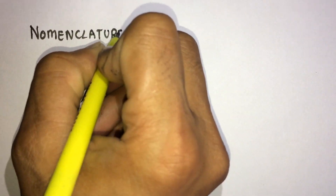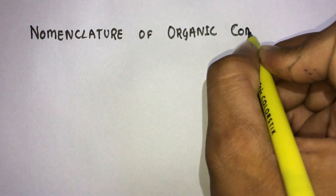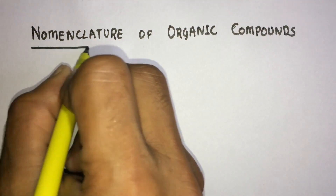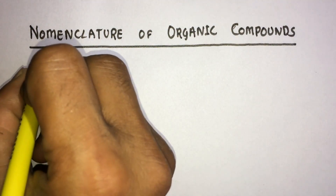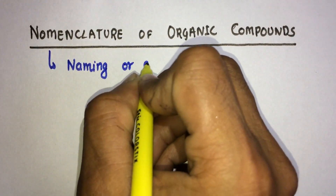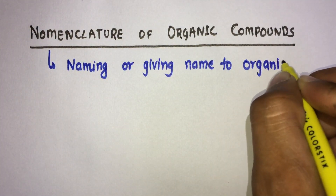Hello guys, welcome back to Medico Pharma Lectures. This is the sixth lecture on organic chemistry. Today we will start a new topic: nomenclature of organic compounds. Nomenclature of organic compounds is the way of naming or giving a name to organic compounds.